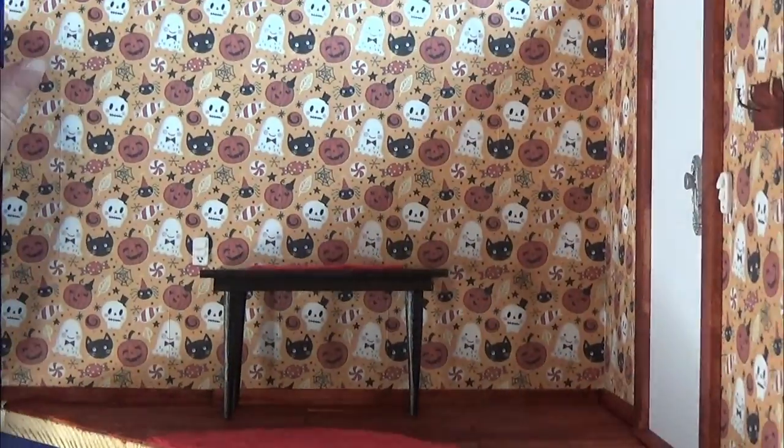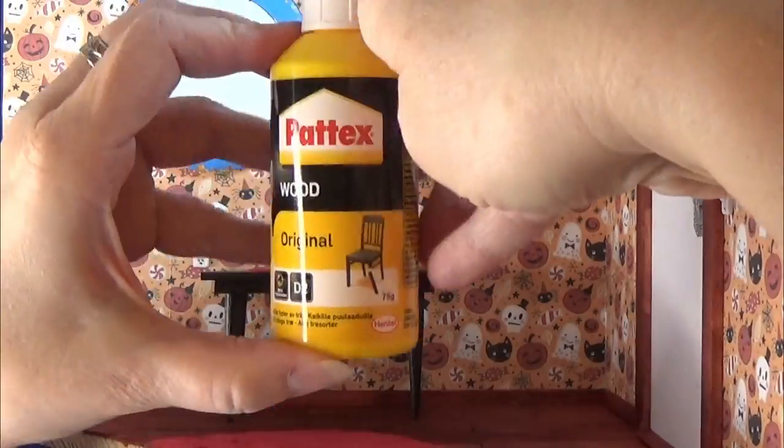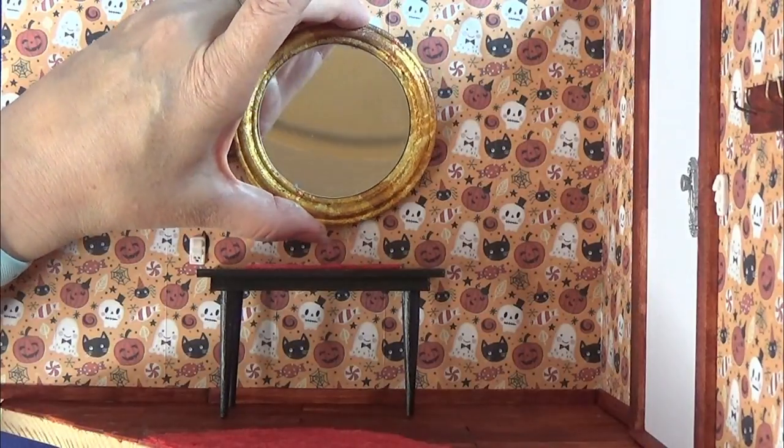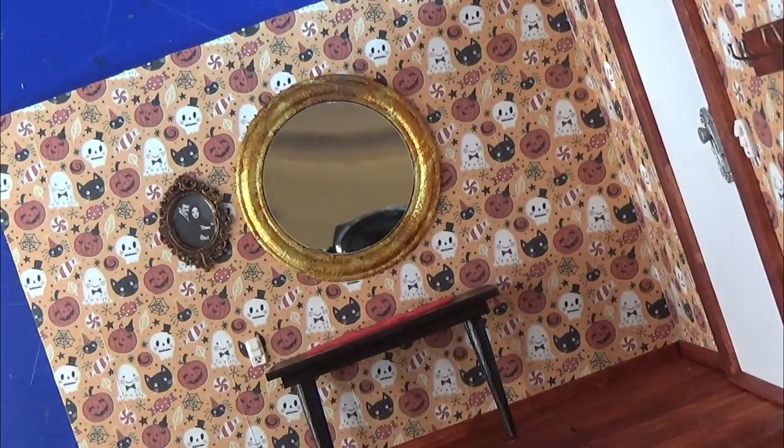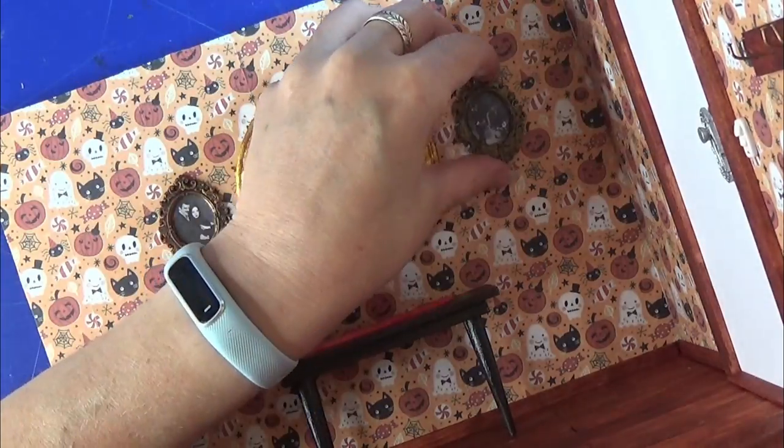So now it's time to glue all these things in place. I am placing this wall on the table so that it is easier to glue these on. Using my Patex and gluing on the mirror and the frames. Then I decide where I want the pictures to hang on the walls and I am carefully gluing them in place.